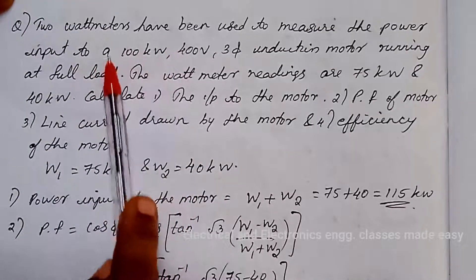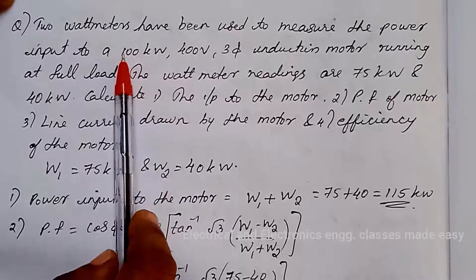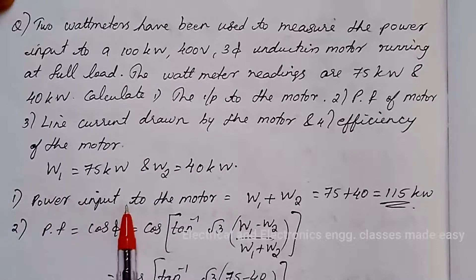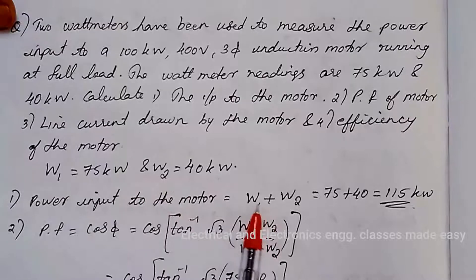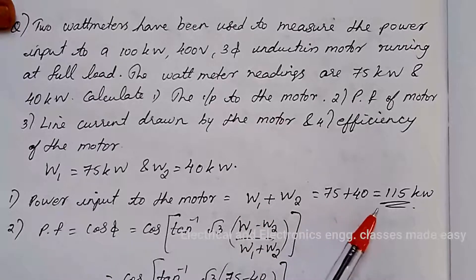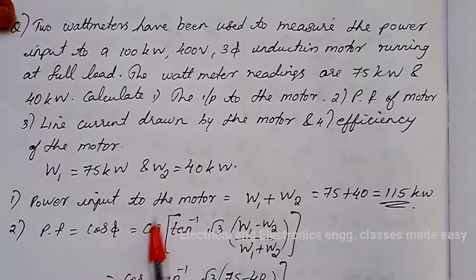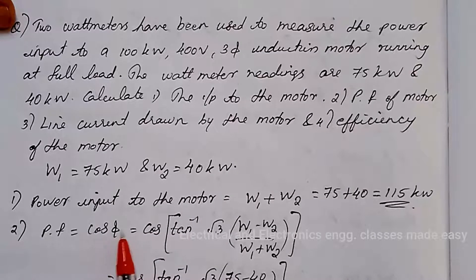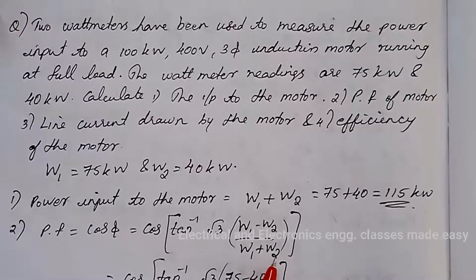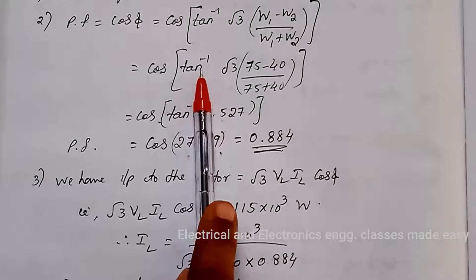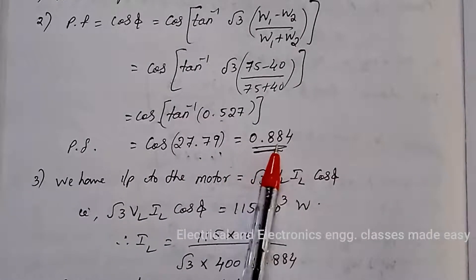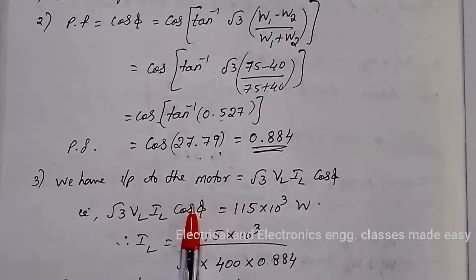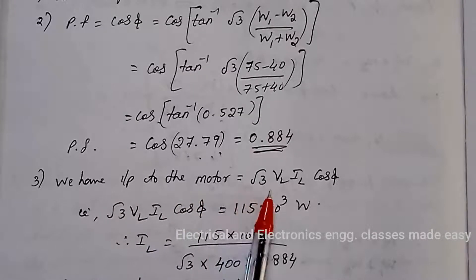The power input to the motor is the sum of the watt meter readings: W1 + W2 = 75 + 40 = 115 kilowatt. The power factor = cos φ = cos(tan⁻¹(√3 × (W1 − W2) / (W1 + W2))) = cos(tan⁻¹(√3 × (75 − 40) / (75 + 40))), and we get the power factor as 0.884.